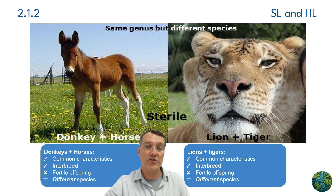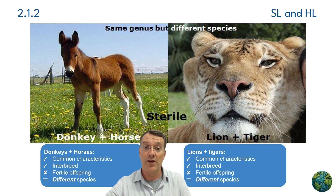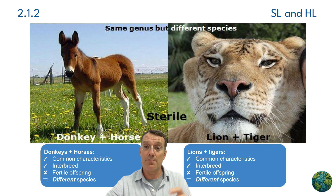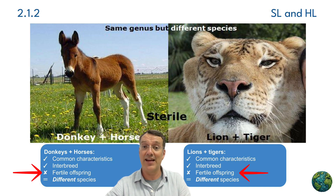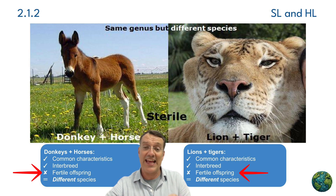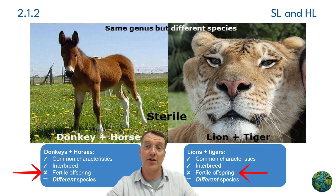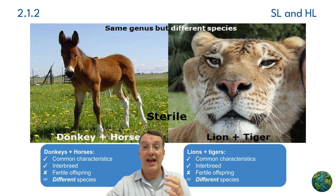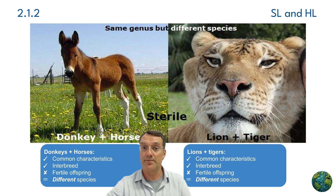However, when we look at crosses between different species like horses and donkeys, or between lions and tigers, while those species can mate, their offspring — mules and ligers respectively — are sterile. That means their offspring cannot reproduce to make more copies of themselves. This reproductive barrier is what defines horses and donkeys, and tigers and lions, as separate species.